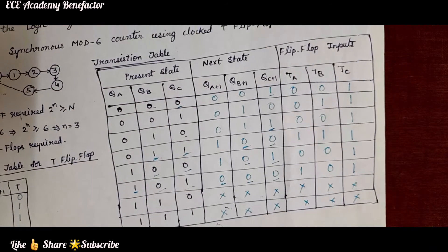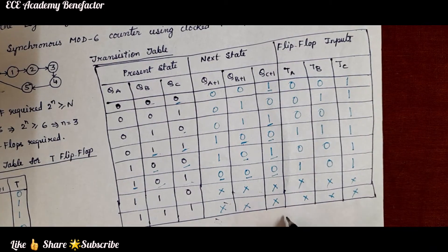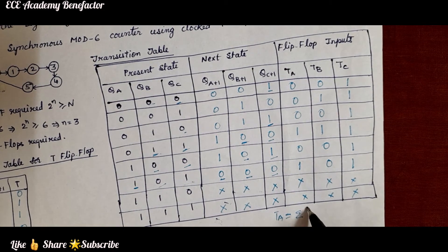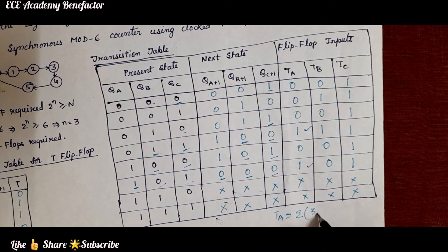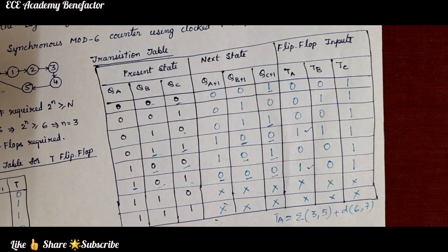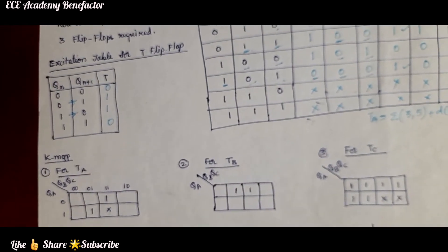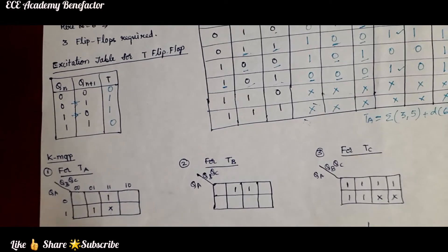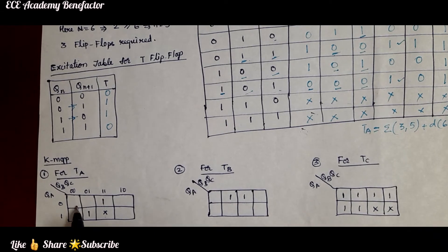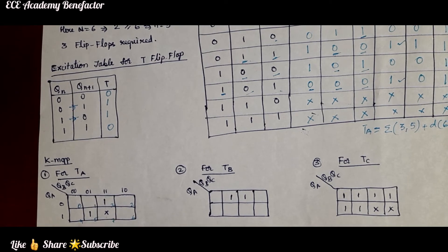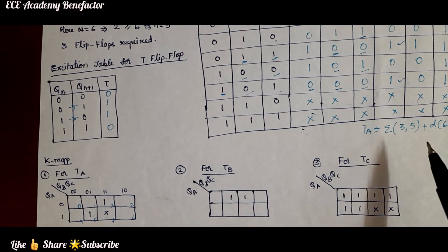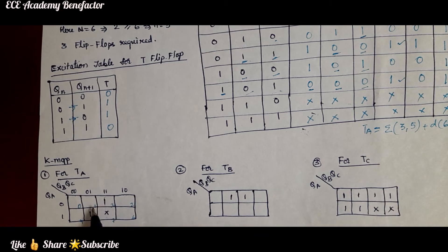Looking at the TA K-map, TA is 1 at cells 3 and 5, and don't care at cells 6 and 7. We fill the K-map with 1 at cells 3 and 5 and X at cells 6 and 7.